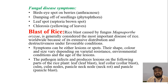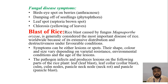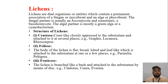Rice blast is caused by the fungus Magnaporthe oryzae and is generally considered the most important disease of rice worldwide because of its extensive distribution and destructiveness under favorable conditions. Rice blast symptoms can be either lesions or spores; their shape, color and size vary depending upon varietal resistance, environmental conditions and the age of the lesions. The pathogen infects and produces lesions on the leaf, leaf collar, culm, culm nodes and panicles.